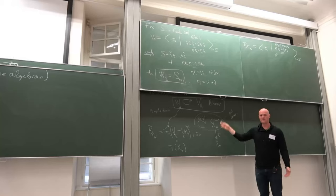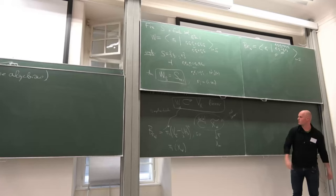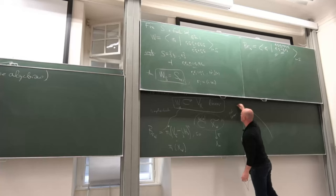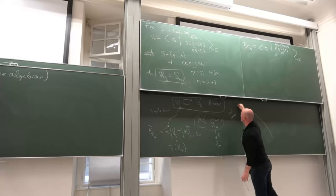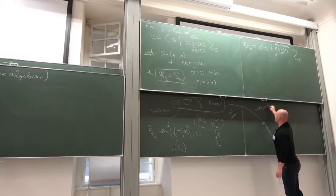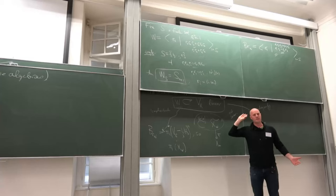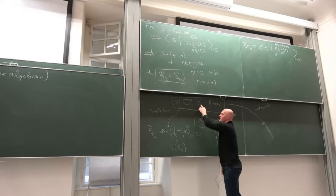There's another way to move from Weyl groups to braid groups, which is of course well known in the categorification community. Instead of complexifying and doing topology, you can categorify this. Another approach is to categorify this story. What that means is that instead of having a group acting on a finite-dimensional vector space, we're going to consider a group acting on a triangulated category, in such a way that if you pass to the Grothendieck group, you recover the original story.